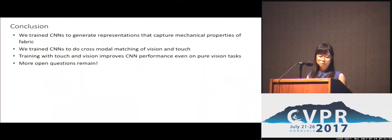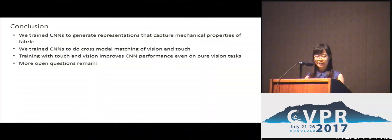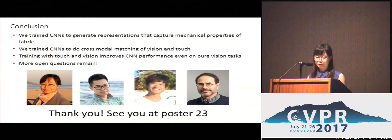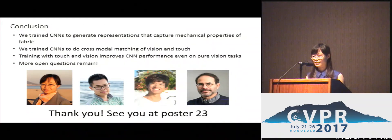As a conclusion, in this work we trained neural networks to generate representations of material properties that are invariant to material configurations and sensory modalities. We used those networks to do cross-modal matching between vision and touch, and found that cross-training with vision and touch can improve performance on pure vision tasks. There are still many open questions and interesting things remaining to be explored. If you want to learn more details or simply discuss tactile sensing, please stop by our poster. Thank you.